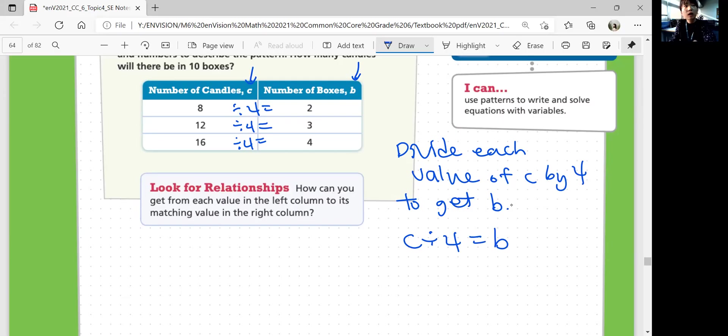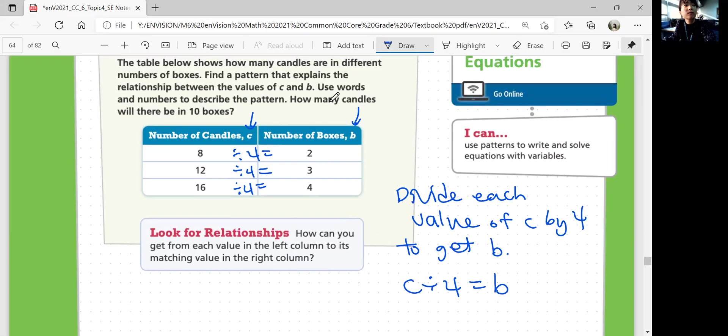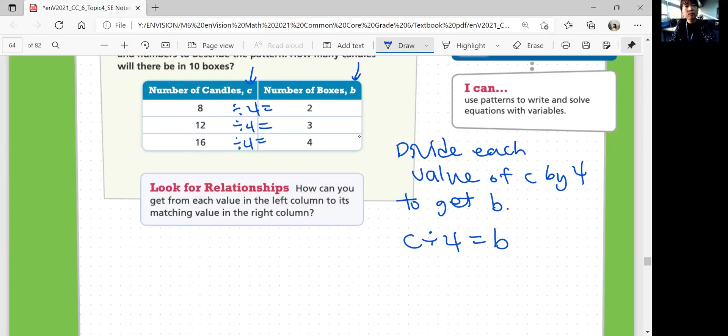So how do we get the value of candles when there's 10 boxes? Boxes is B, right? So if there's 10 boxes, if B is 10, what's C? In order to get C from B to C, what do you do? 4 times 4, 3 times 4, 2 times 4. So B is equal to C times 4.